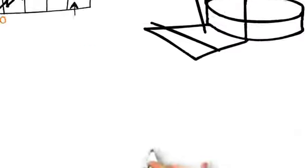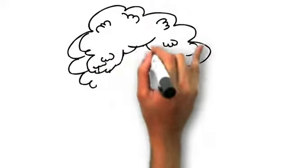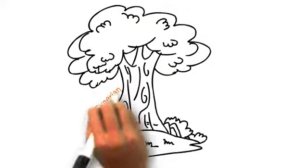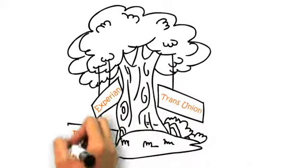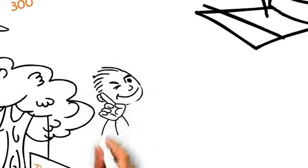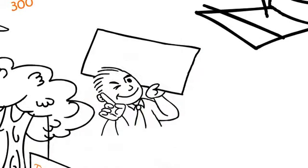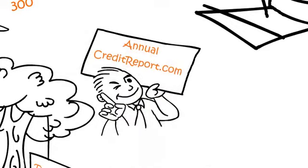So, what's your score? You can find out by contacting the three credit reporting agencies: Experian, TransUnion, and Equifax. You can also try MyFICO.net or other services. Most will charge a nominal fee for the service. You can even request a free credit report once every 12 months from AnnualCreditReport.com.